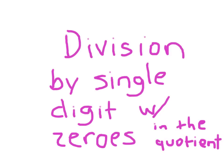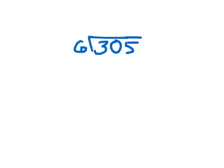Let's look at division and dividing by single digit with zeros in the quotient. We might have this problem here where we have 305 divided by 6. 6 cannot go into 3, but 6 can go into 30.